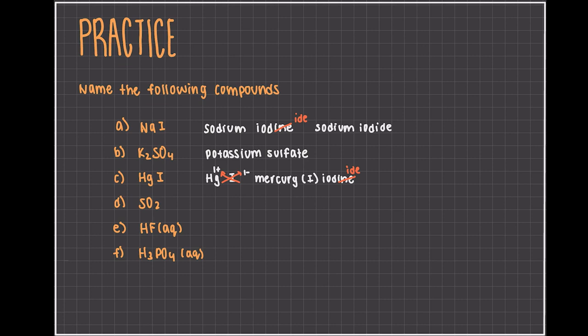For SO2, we have a covalent compound, so we need to have prefixes. First, we have sulfur, and then we know we have two oxygens, so we have to put di-oxygen. Oxygen will then become oxide to make sulfur dioxide. For HF, it's important to note that it's in aqueous form, which means it's going to release that H+ ion and make it an acid. So, we start with hydro, and then we know we have fluorine. The 'ine' ending will then become 'ic', to make us hydrofluoric acid.